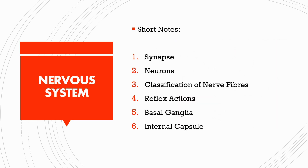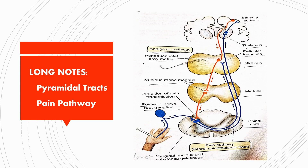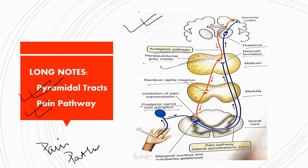Next unit will be the nervous system. From the nervous system, synapses, neurons, classification of nerve fibers are highly asked. Other questions include basal ganglia and internal capsule. For long notes from this unit, you have the pyramidal tracts and the pain pathway. This diagram for the pain pathway, derived from Sembulingam's textbook, is the main diagram you must include in your answer.